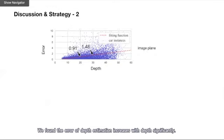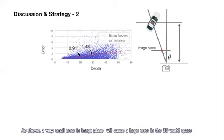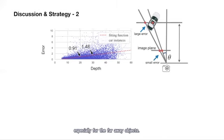Let's see our second design. We found the error of the depth estimation increases with the depth. What's worse, the localization errors on the 2D image will be magnified by the depth. As shown, a very small error in the image plane will cause a large error in the 3D workspace, especially for the faraway objects.